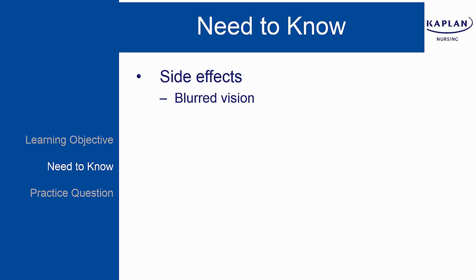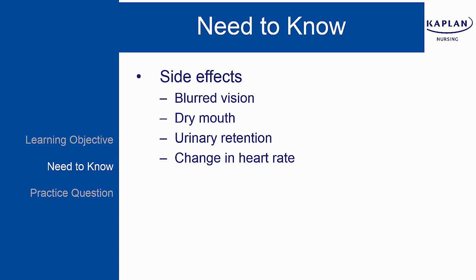Side effects and adverse effects include blurred vision or dry eyes, dry mouth, urinary retention, and change in heart rate. They can also cause constipation — they tend to dry things up. A helpful mnemonic to remember is: I can't see, I can't pee, I can't stool, I can't drool. That helps you remember those four key side effects.